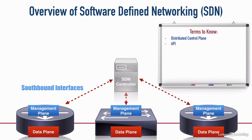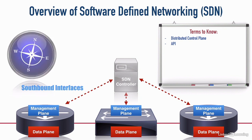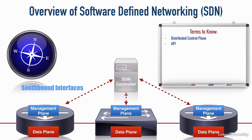Just based on the way a compass works, if something is down, it's south of us. So these are called southbound interfaces, or SBIs for short. This type of model, where the control plane is centralized within the SDN controller, is called a centralized control plane. The API speaking down to those devices might be something like OpenFlow as an example — that's an open standard.